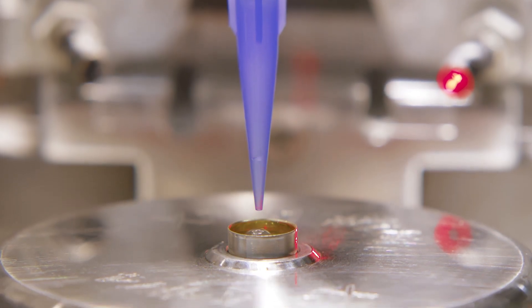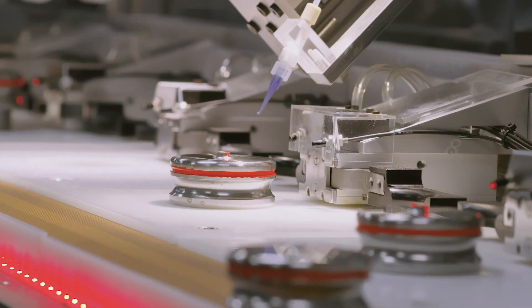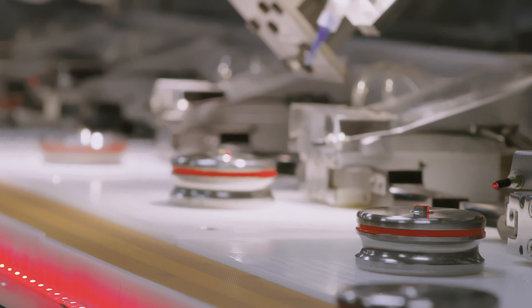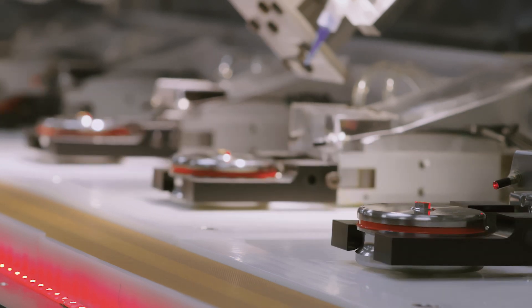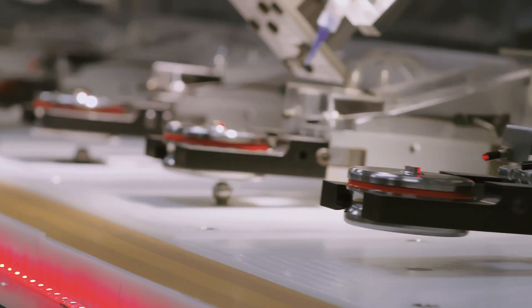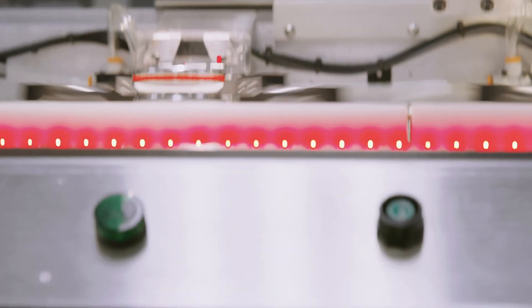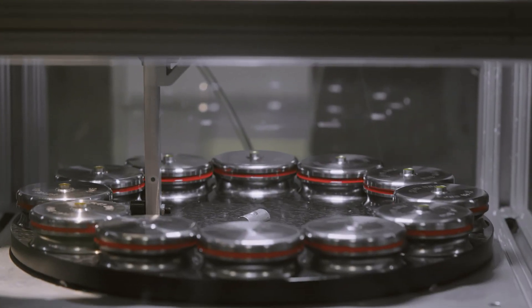A second electrolyte is dispensed on top of the separators and then another group of separators are placed. The cathode sub-assembly is then placed into a timer box to allow the second electrolyte to soak into the separators.